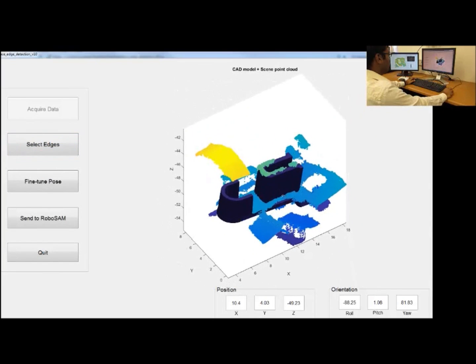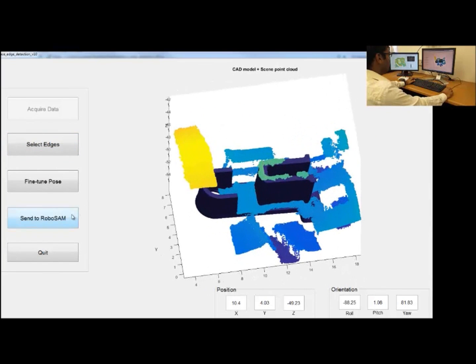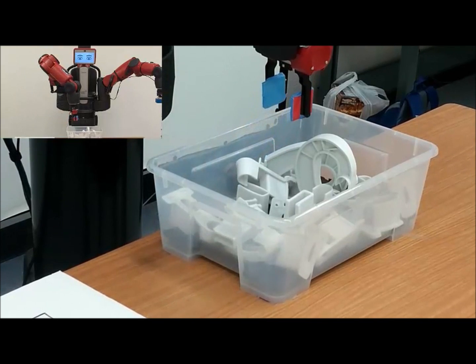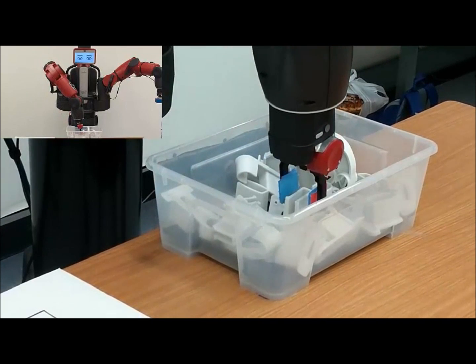If the estimate appears reasonable, the human can send the information to the robot. The robot uses the information received from the human to finish the task.